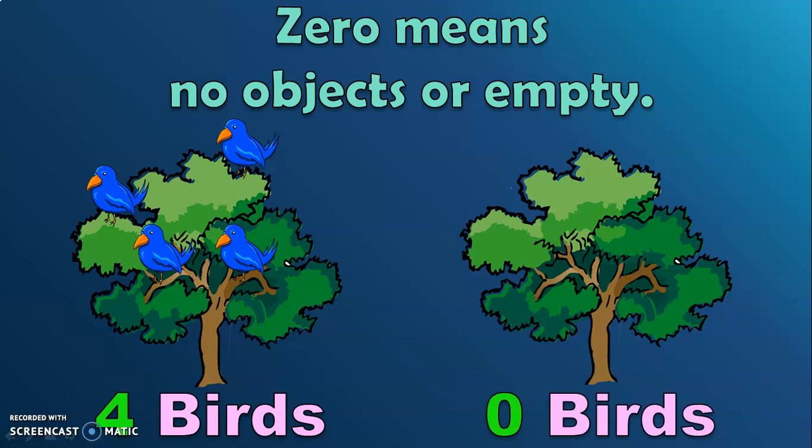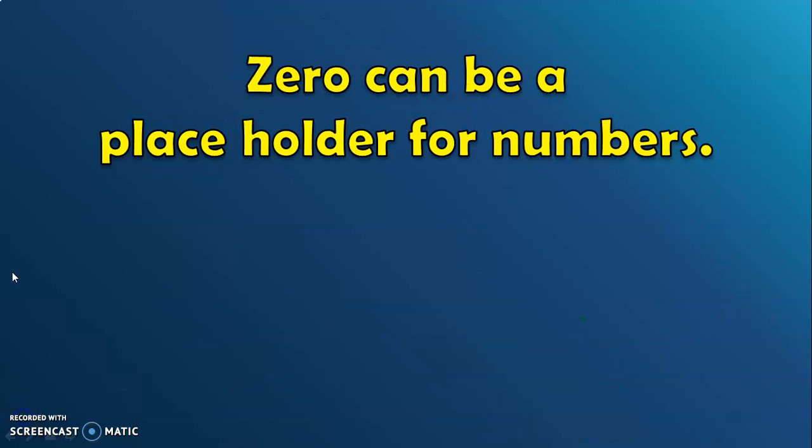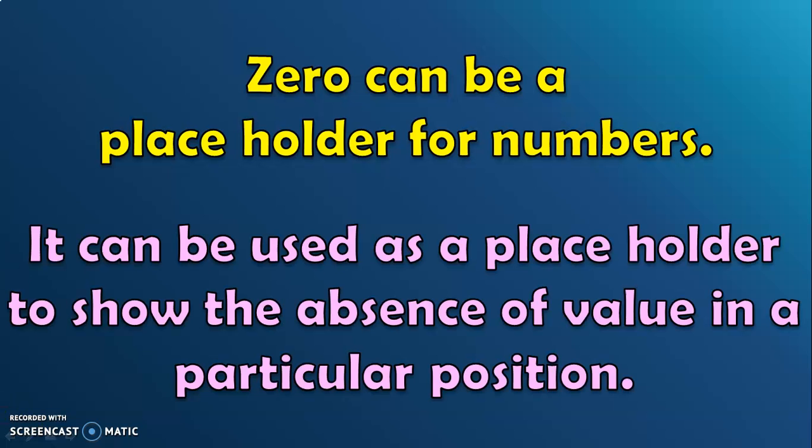So, dear viewers, hope you have understood that zero means it does not have any value. The number zero does not have a value when it is alone. But zero can be a placeholder for numbers. It can be used as a placeholder to show the absence of value in a particular position. Let us see this with an example to understand it better.